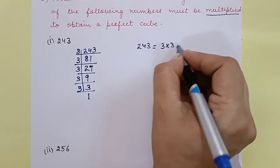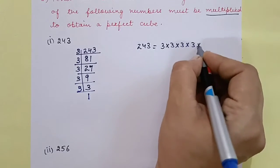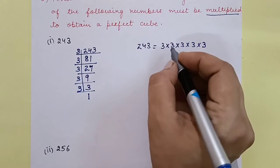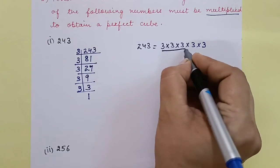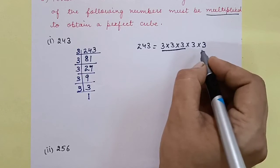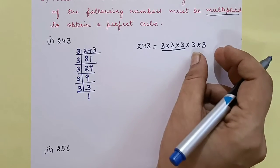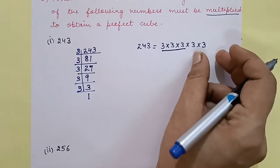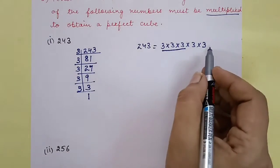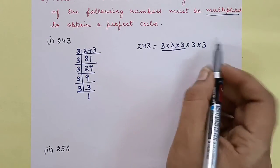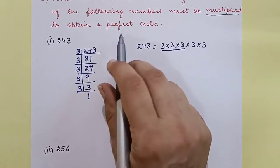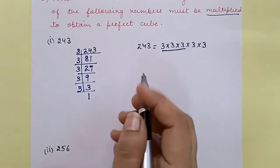We have five 3s: 1, 2, 3, 4, and 5. Now in the cube chapter, we do grouping of 3. We make a group of three 3s, and we are left with two 3s. If we had one more, the pairing — the cubes' pairing — would be complete. It means we are short by one 3. So when we multiply by 3, a perfect cube number will be obtained.